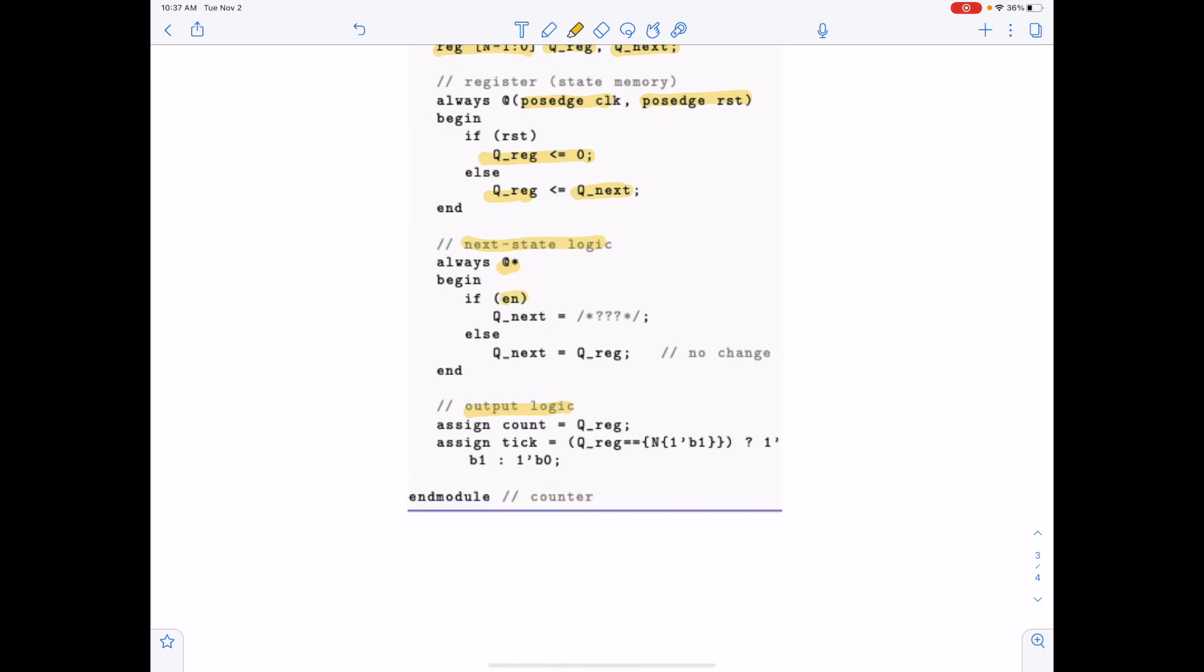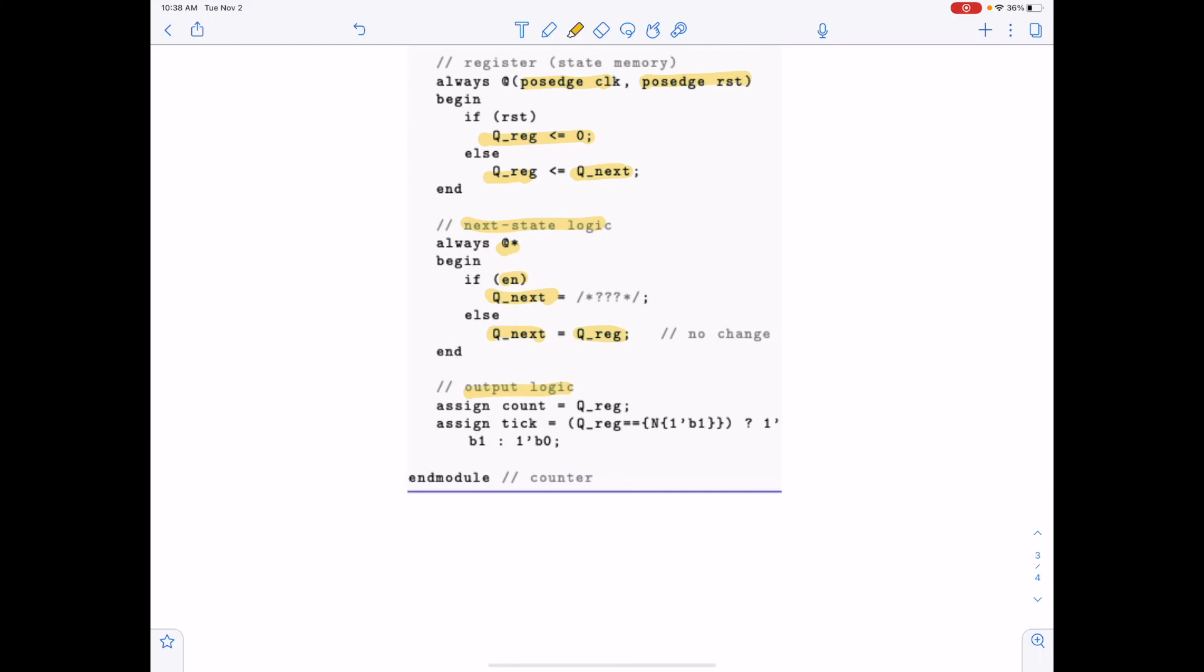If we have an enable, then the next state should be what? Well, it's a counter, so you should increment the next state. I'll let you put that in. It's pretty straightforward. There's nothing complicated here. If we don't have enable, then the next state just holds the value. It doesn't count. You just take q next is q reg, whatever the old state was.